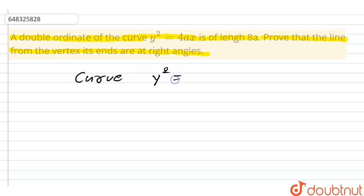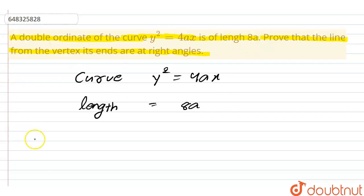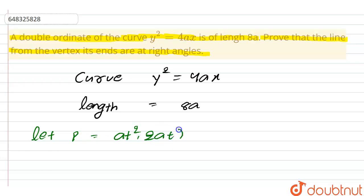Given: y² = 4ax. The length of the cord is equal to 8a. Let P be the point (at², 2at).